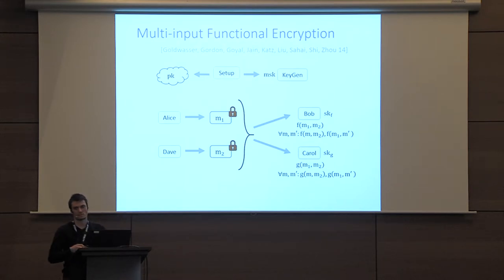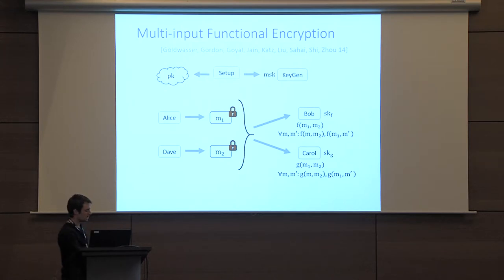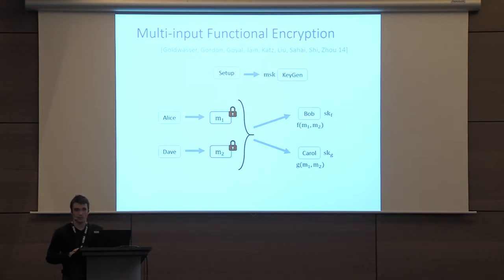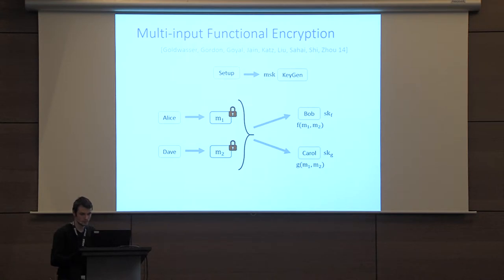This means that the security for public key functional encryption in the multi-input setting is a bit weak. For this reason, because the leakage is inherently so huge, we will consider the private key setting. So now there is no public key, and the master secret key is necessary to encrypt messages for each slot. This way, we don't have as much leakage. Bob cannot simply encrypt messages of his choice for any slots.